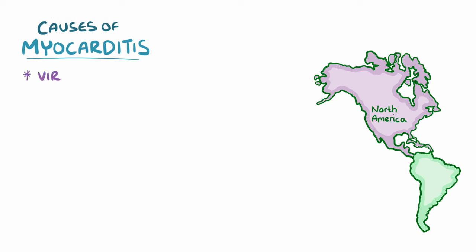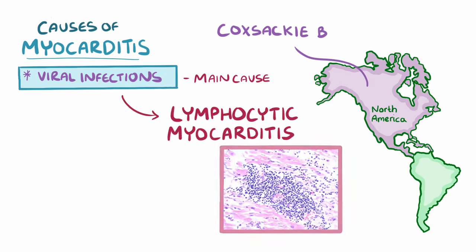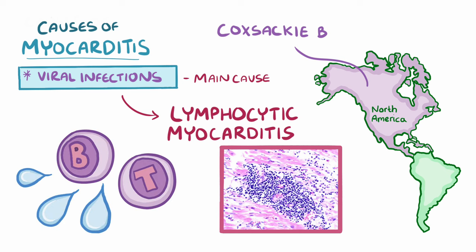In North America, viral infections, specifically Coxsackievirus B infections, are the main cause of myocarditis. Viral infections can trigger lymphocytic myocarditis, which is when lymphocytes — the B and T cells of the immune system — make their way into the interstitial space, the space between heart muscle cells.